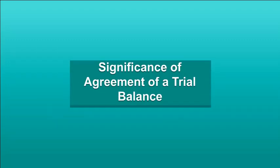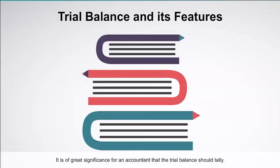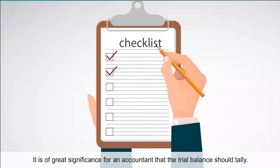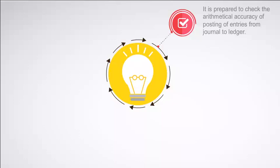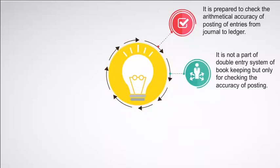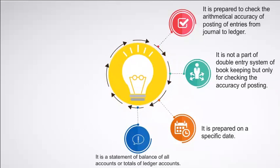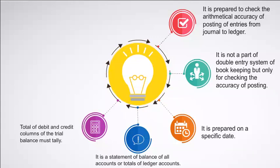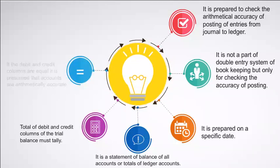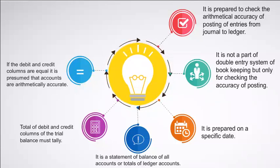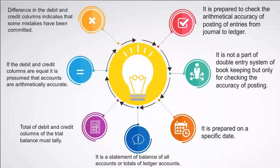Significance of Agreement of a Trial Balance: The features of a trial balance include: it is prepared to check the arithmetical accuracy of posting entries from journal to ledger; it is not part of the double entry system but only for checking posting accuracy; it is prepared on a specific date; it is a statement of balances of all accounts; the total of debit and credit columns must tally; if both columns are equal, accounts are presumed arithmetically accurate; and a difference in columns indicates mistakes have been committed.